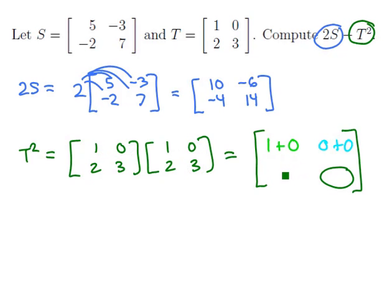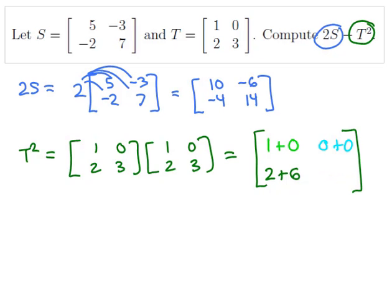Similarly, the entry in the second row first column is found by taking the second row dotted with the first column, which will get us 2 plus 6. And the second row second column entry is going to be found by taking the dot product, which will get us 0 plus 9, since that's the dot product of the second row and the second column.